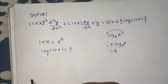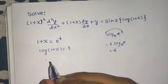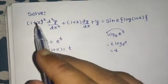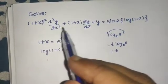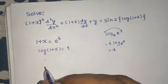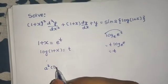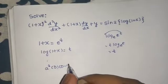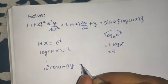Now after this substitution, what we do is wherever we see this (1+x)² * d²y/dx², we replace that by a² times d(d-1) times y.